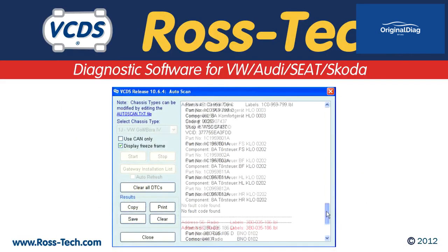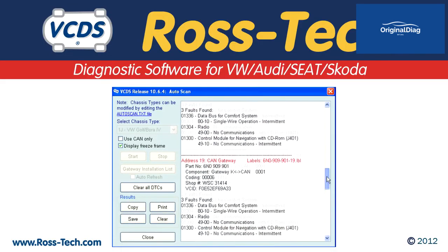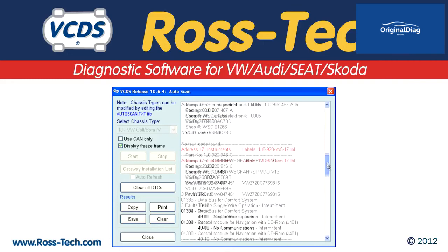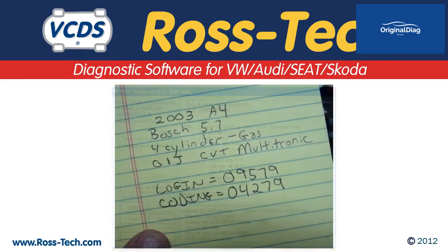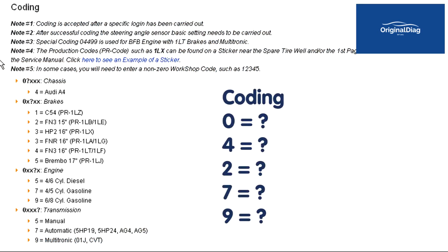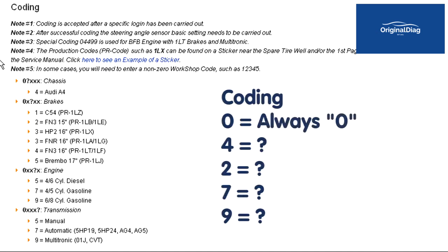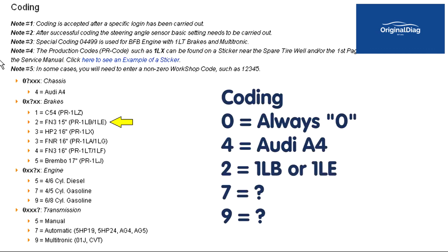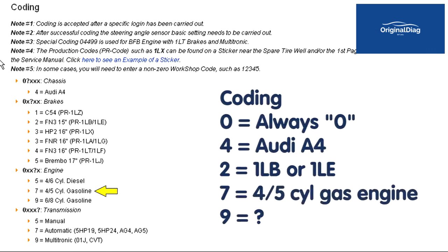If you happen to know what the correct soft coding is for the ABS module because you ran an auto scan before the coding was cleared out, then you can reverse engineer it to come up with the login. Again, using the information from this 2003 Audi A4 with the coding of 04279. Go to the appropriate wiki page and look at the coding information. Break down the code into the different segments: the first digit is always 0, 4 equals Audi A4, 2 equals 1LB or 1LE PR code to the brakes, 7 equals 4 or 5 cylinder gas engine, and 9 equals multitronic transmission.